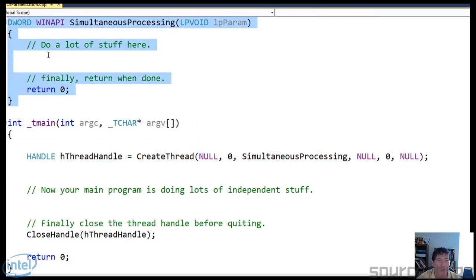So this thread function is going to do a lot of stuff, and when it's done doing a lot of stuff, it's going to return, which will stop the thread. Finally, when your program is done, you just close the thread handle. Or you can close it any time after the thread is finished.